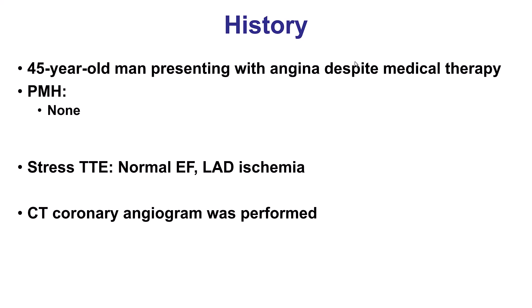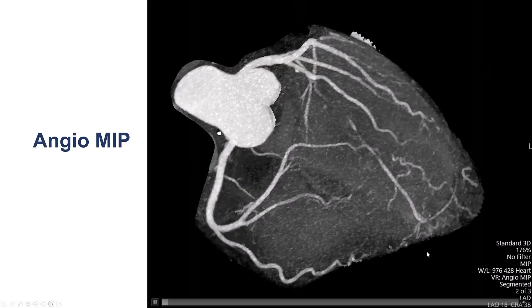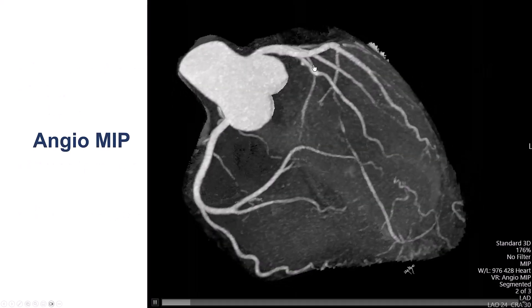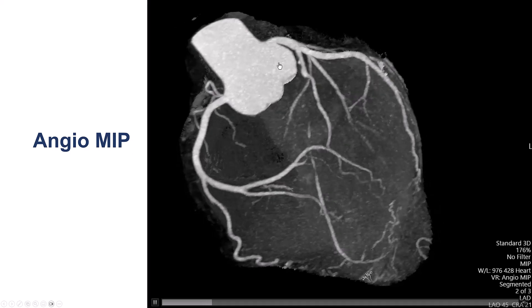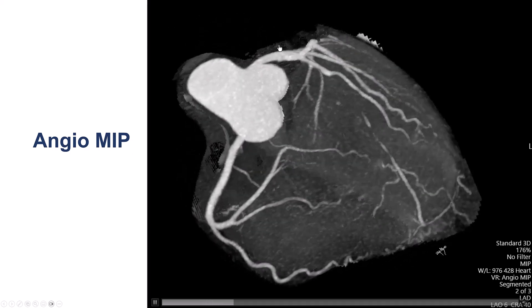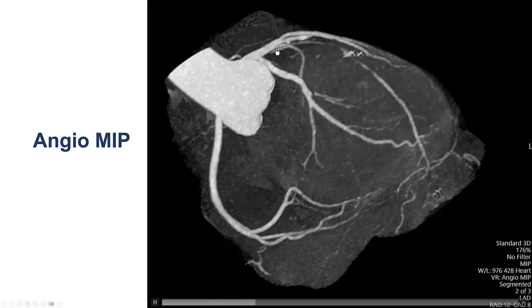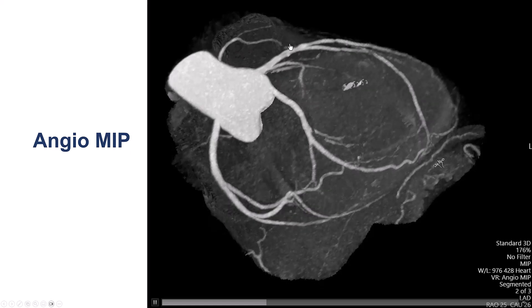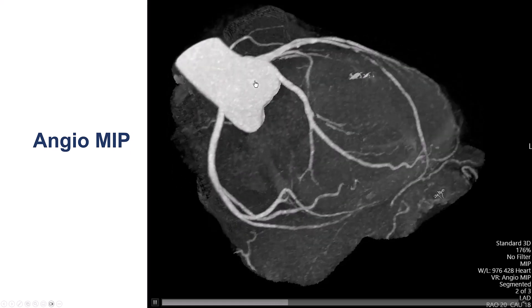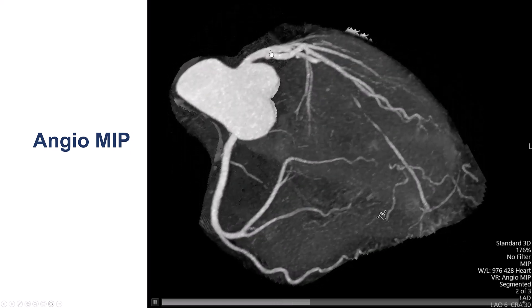This was a young gentleman who presented with angina, was found to have a normal ejection fraction, and was sent for a coronary CTA. This is the NGO MIP, in which even if you are not an expert in coronary CT, you can appreciate that the LAD has an occlusion at the proximal segment.